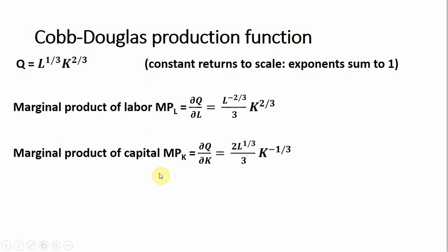As for the marginal product of capital, we're going to bring down the two-thirds in front. So there it is, the two-thirds. And then we have K to the two-thirds — we're going to subtract one from that, leaving us with K to the minus one-third. Nothing happens with the L term; it's treated as a constant.